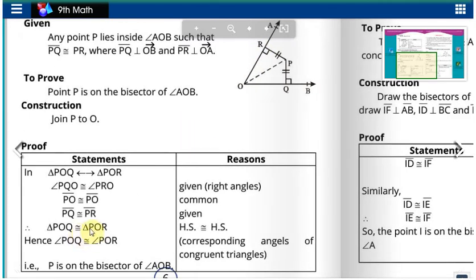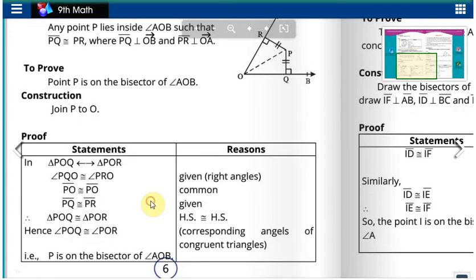So triangle POQ is congruent to triangle POR. Hence, angle QOP and angle ROP will be congruent to each other because they are the corresponding angles of congruent triangles. So P is on